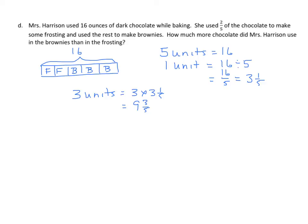And we could, again, find that for the frosting. 2 units equals 2 times 3 and 1 fifth equals 6 and 2 fifths. Now, we could do that, but we can skip this step because we know that 3 units minus 2 units is 1 unit. And we know that 1 unit is 3 and 1 fifth. And that's what we'd get if we'd subtract these two values, but we could skip this step. 9 and 3 fifths minus 6 and 2 fifths equals 3 and 1 fifth.